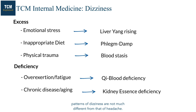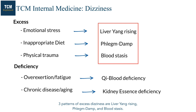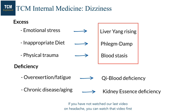The three patterns of excess dizziness are liver yang rising, phlegm damp, and blood stasis. As you can recall, they are essentially the excess patterns of headache, and the formulas are the same as well. If you have not watched our last video on headache, you can watch that video first and come back to this one, so that you can learn more about these formulas in more detail.